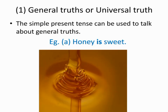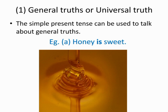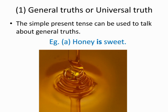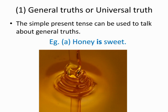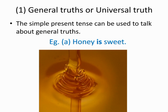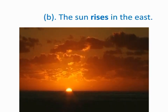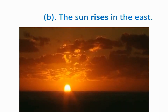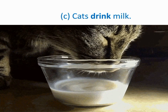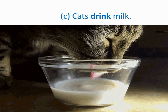When you're ready, let's go. This is the first use of the simple present tense: to represent general truths or universal truths. The simple present tense can be used to talk about general truths. Examples: 'Honey is sweet.' 'The Sun rises in the east.' 'Cats drink milk.' These are unanimously approved — everybody will agree on them.